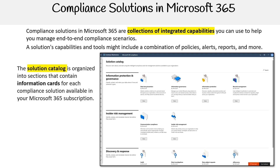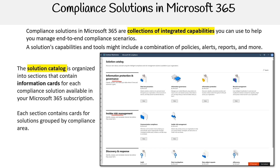The solution catalog is organized into sections that contain information cards for each compliance solution available in your Microsoft 365 subscription. Each section contains cards for solutions grouped by compliance area. As you can see in the image here, there's the information and protection area, insider risk management, discovery response, and so on.